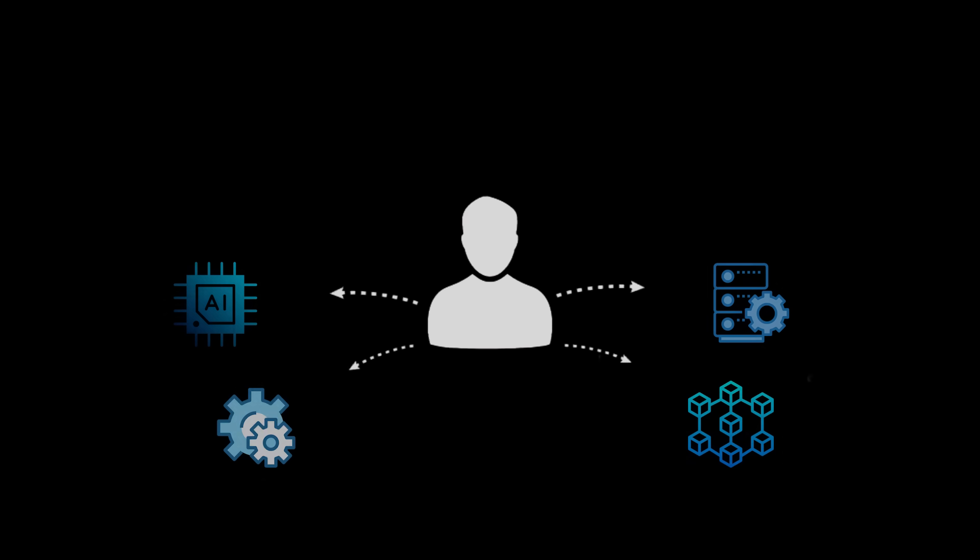I eventually realized that instead of trying to learn all of Rust, I should have picked a single domain and learned only the parts of Rust needed to be productive in that context. Rust isn't one skill — it's a collection of overlapping skill sets that look very different depending on what you're trying to build.